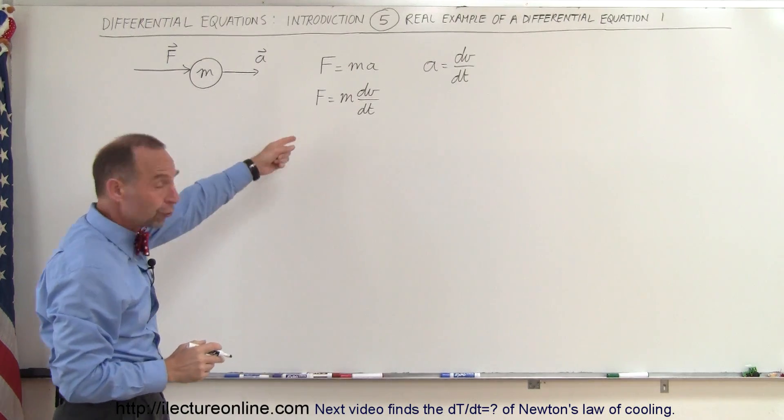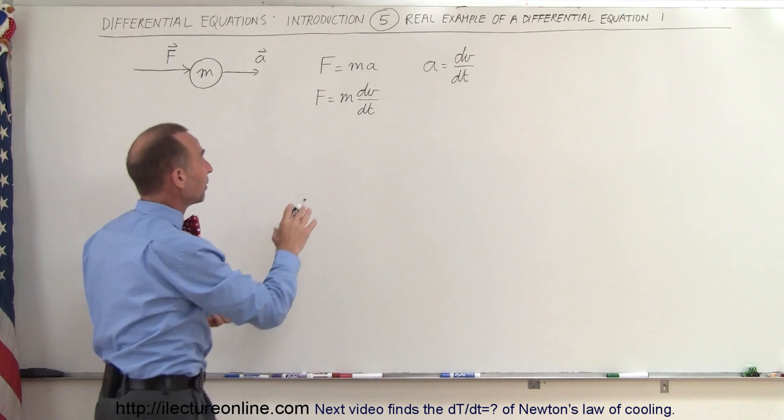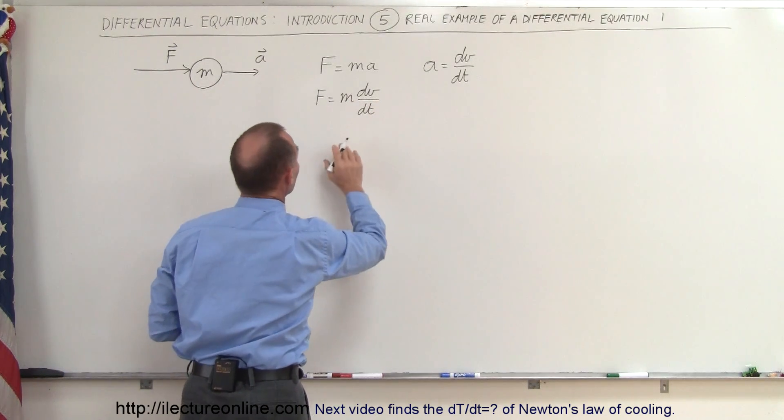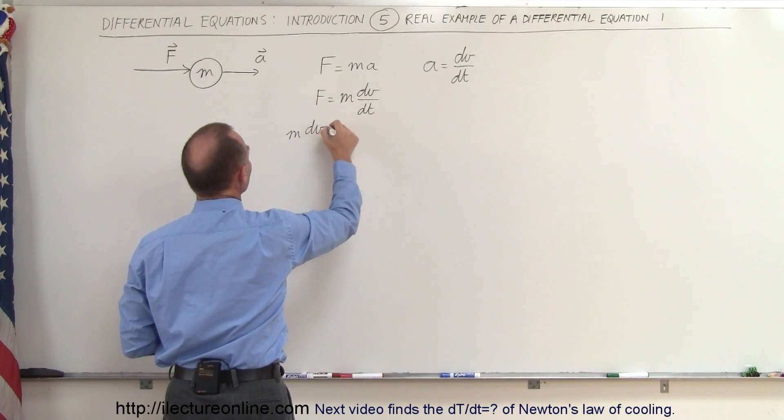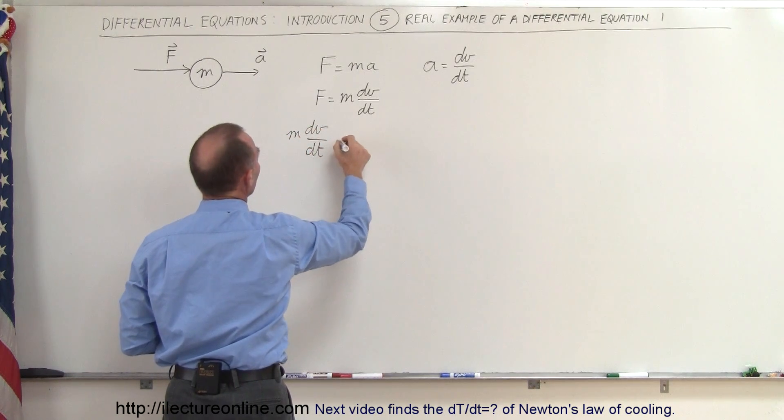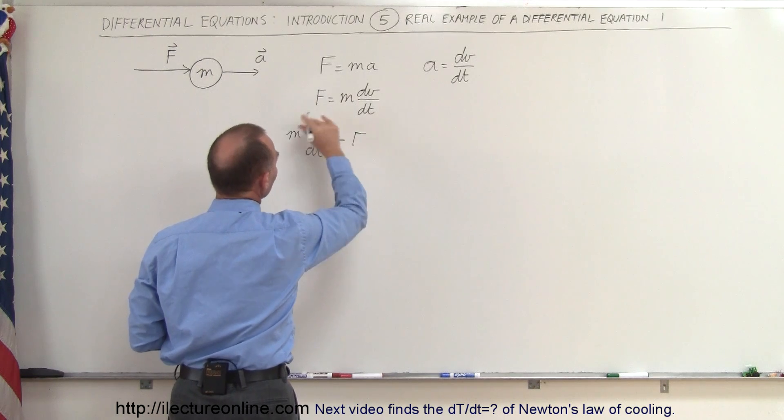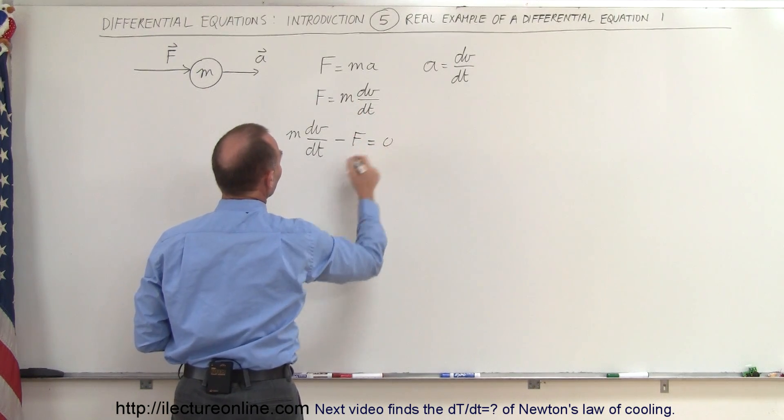That would be a first-order differential equation. So if we solve this a little bit better, we put the f on the other side, set equal to 0. We can write this as m times dv/dt minus f, by bringing f across, is equal to 0.